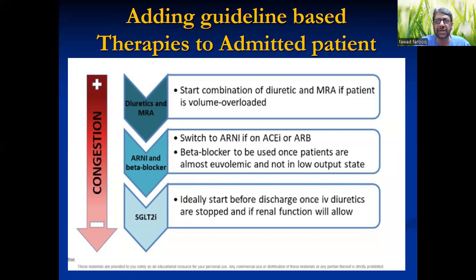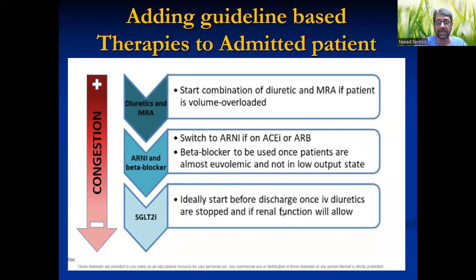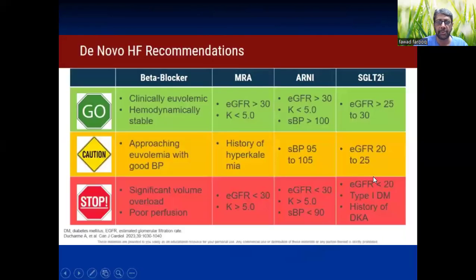For an inpatient, you can start combination diuretic and MRA if the patient is volume overloaded, switch to ARNI or ACE/ARB with beta blocker. If already on ACE or ARB, beta blocker should be used once the patient is euvolemic. The SGLT2 should be started before discharge, once the need for IV diuretics has reduced.